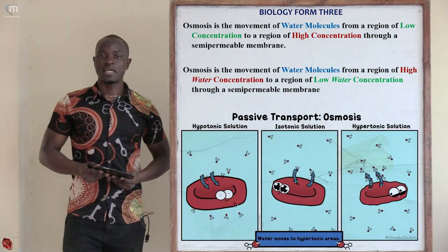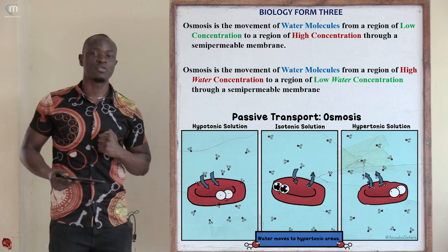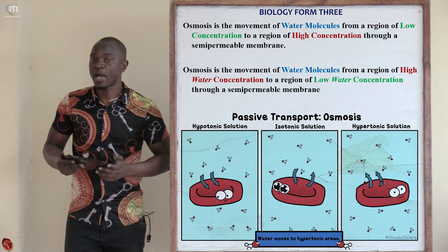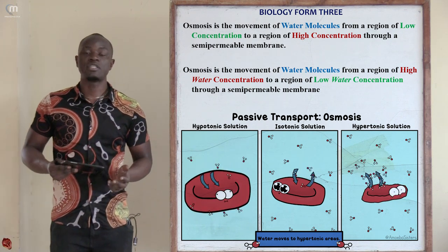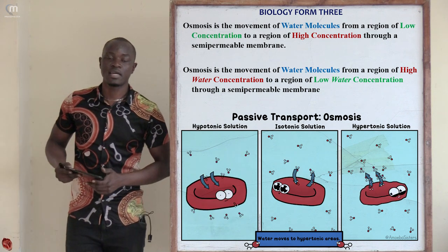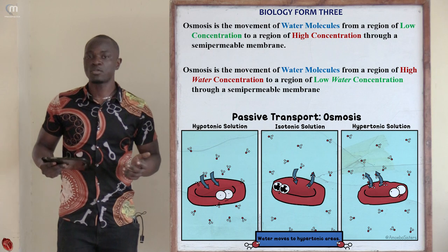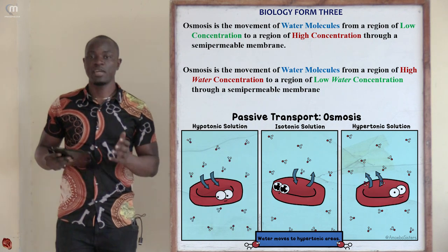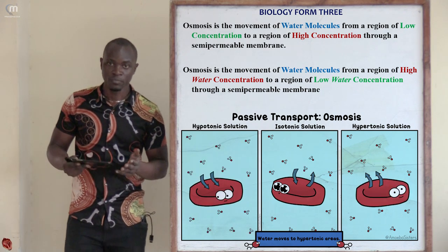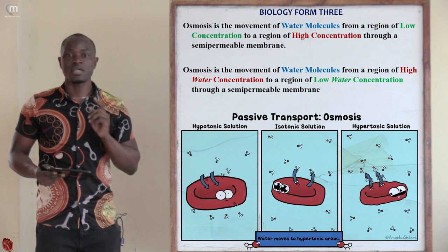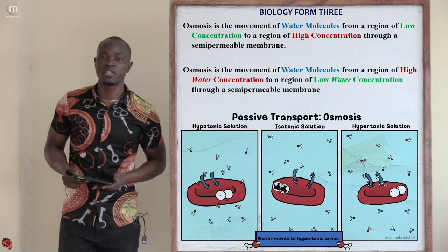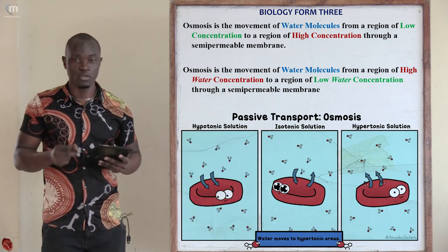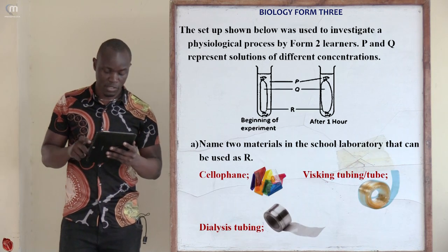In osmosis we discuss three types of solutions: hypertonic solution, which is highly concentrated; hypotonic solution, which is lowly concentrated; and isotonic solution. For isotonic solutions, these are two solutions separated by a semi-permeable membrane that have exactly the same concentration. If two solutions have the exact same concentration and are separated by a semi-permeable membrane, they automatically become isotonic solutions.